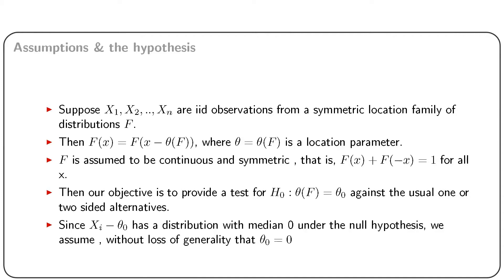Under symmetry, xi minus theta and theta minus xi have the same distribution for each i, and hence theta in this case is a median of f. Our objective is to provide a test for theta equal to theta-naught against the usual one or two-sided alternatives. Since under H0, xi minus theta-naught has a distribution with median at 0, we can, without any loss of generality, assume theta-naught as 0.